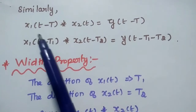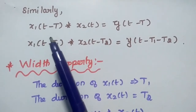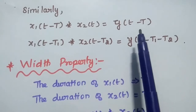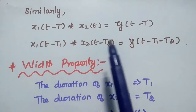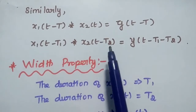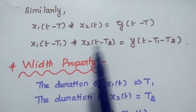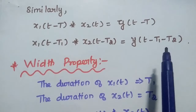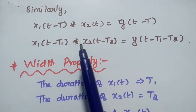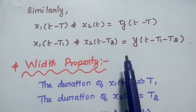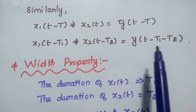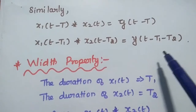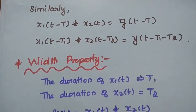Similarly, if we shift the first signal X1 of t minus T, that will also be reflected in the output. If we shift both signals with delays T1 and T2, both delays are added on the output side: X1 of t minus T1 convolved with X2 of t minus T2 is equal to y of t minus T1 minus T2. This is called the shift property of the convolution integral.